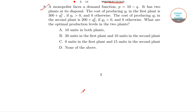Question number 8 goes like this: a monopolist faces a demand curve p equals 10 minus q. We'll write down the demand curve first. It is given by p equals 10 minus q. The monopolist has two plants at its disposal. The cost of producing q1 in the first plant is given as follows.